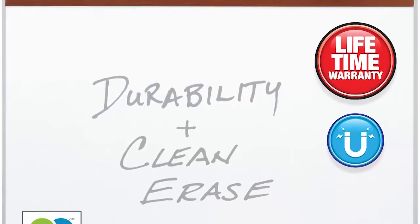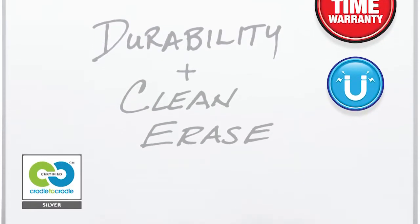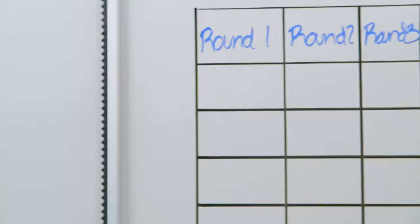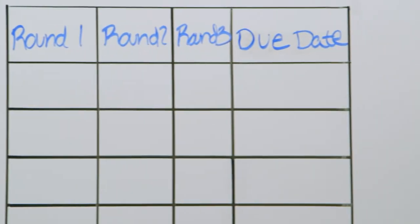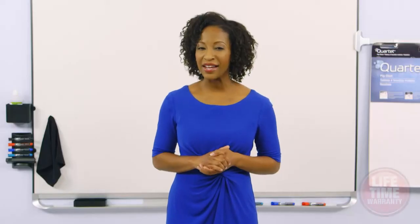Finally, the rhino of all whiteboards is the Quartet Duramax porcelain whiteboard surface, our highest quality board. The fused enamel and heavy gauge steel surface is backed by a solid substrate. These are the real deal, and they come with a lifetime warranty.